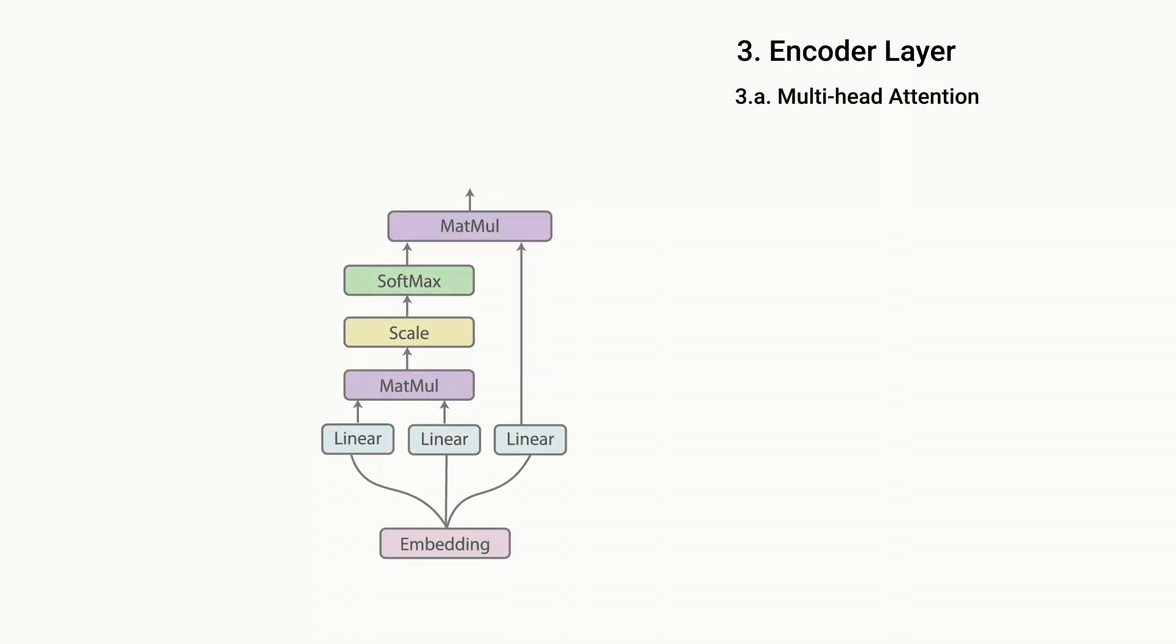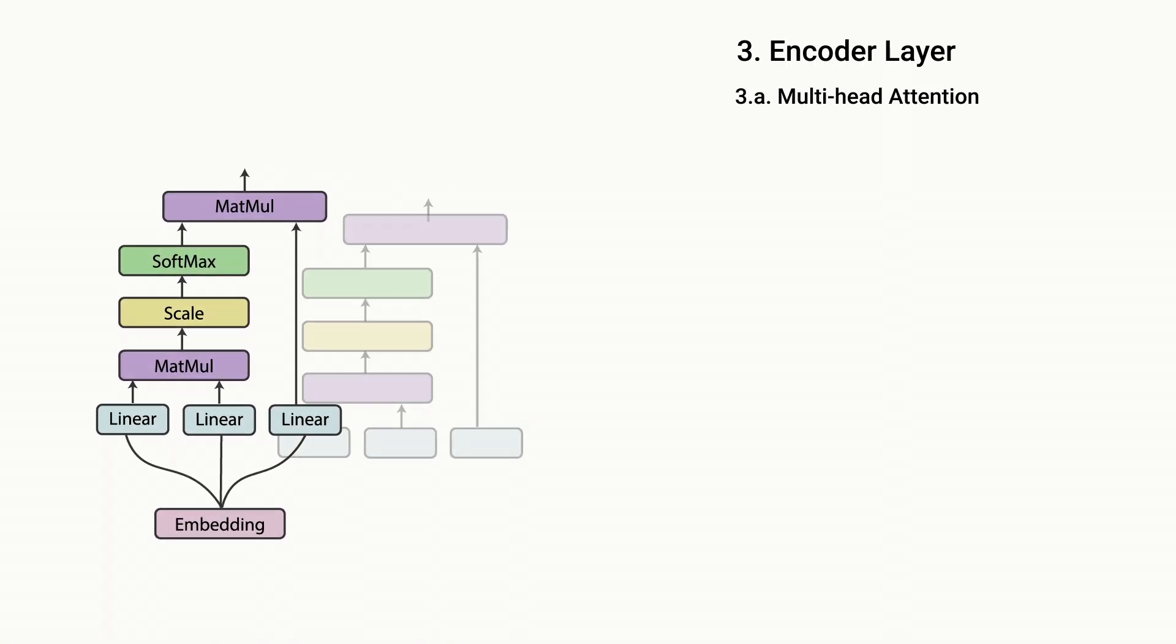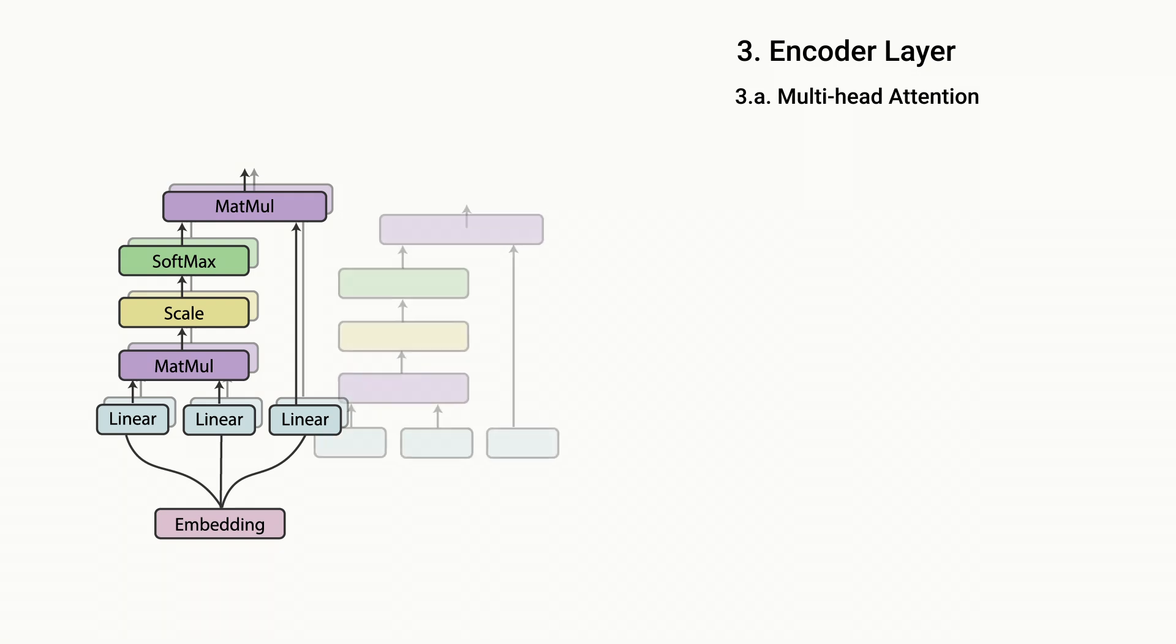So let's consider the following example: James gave flowers to Mary. We see that the word gave has different meanings to different parts of the sentence. James expresses who is doing the giving, flowers expresses what's being given, and Mary expresses who the item was given to. And so to account for the fact that a word can mean different things to different neighbors, the transformer combines the outputs of several of these self-attention models.